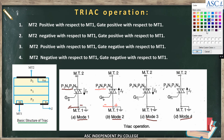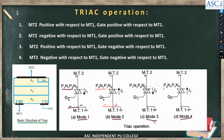Now consider mode 3. In this mode, MT2 is positive with respect to MT1, and gate is negative with respect to MT1. MT2 is connected to the positive terminal of battery, MT1 to the negative terminal, and the gate terminal is connected negative with respect to MT1. Again, current flows from higher potential to lower potential — that is from MT2 to MT1 — through the P1, N1, P2, N2 layer.